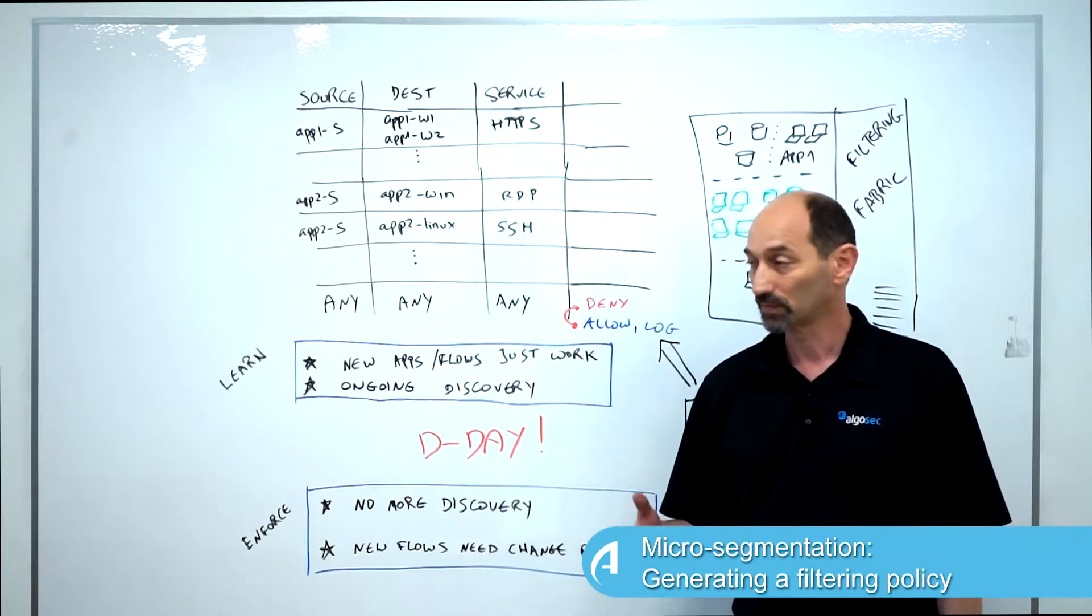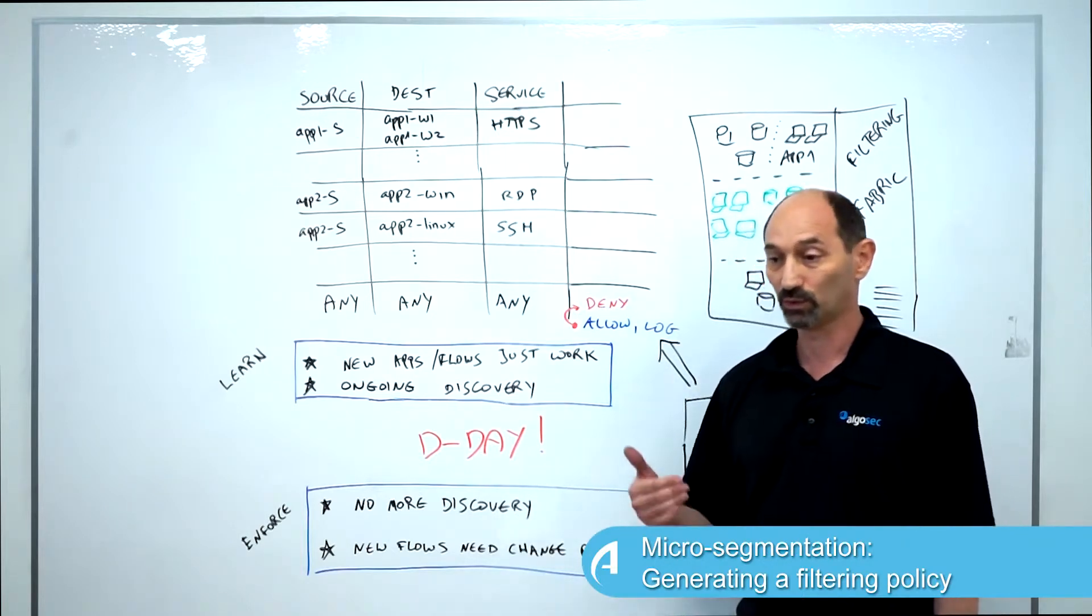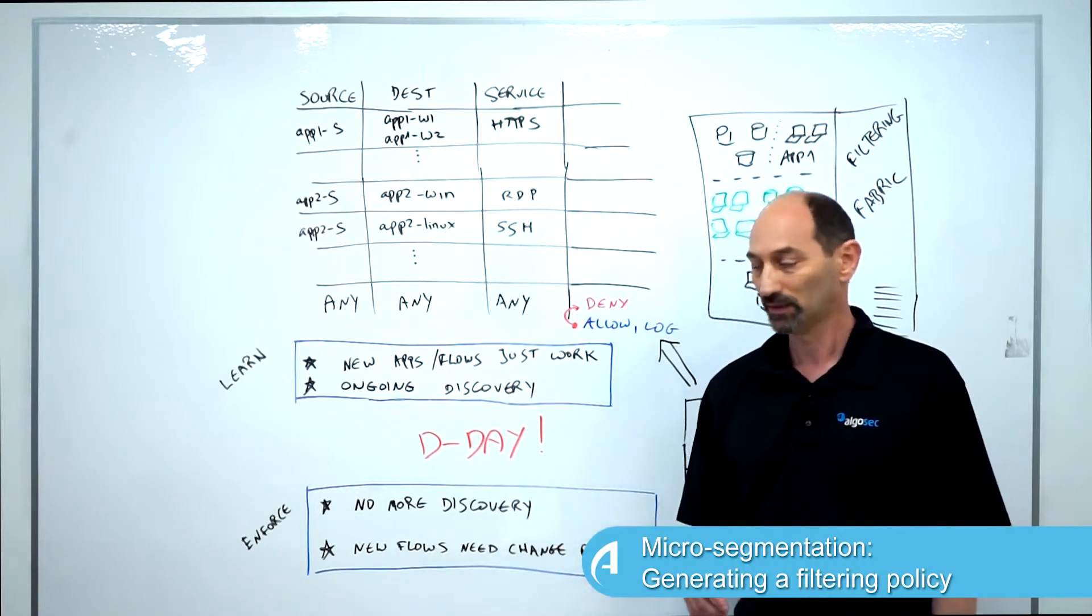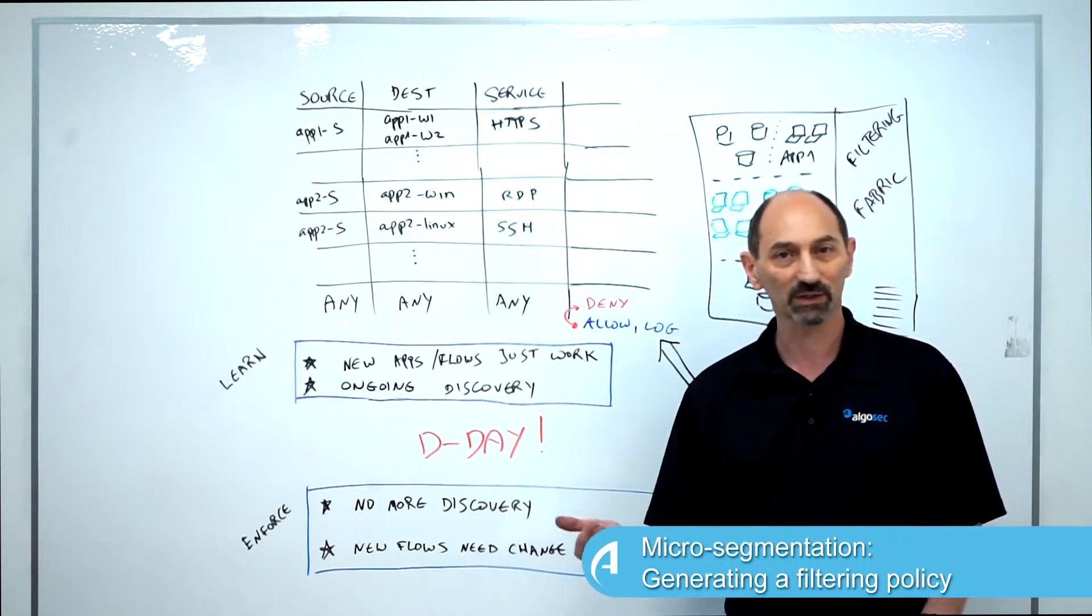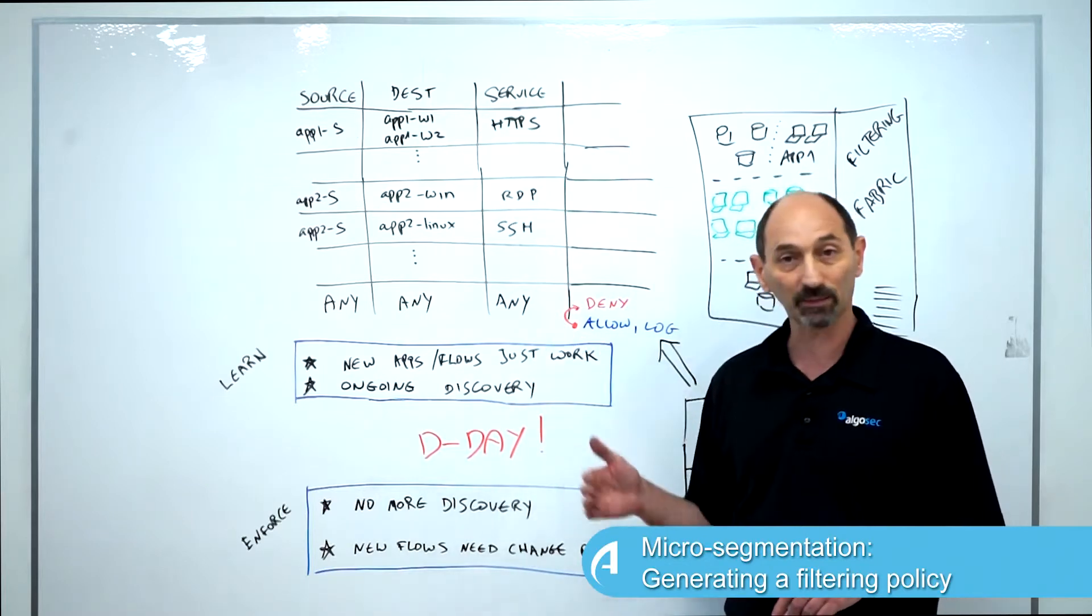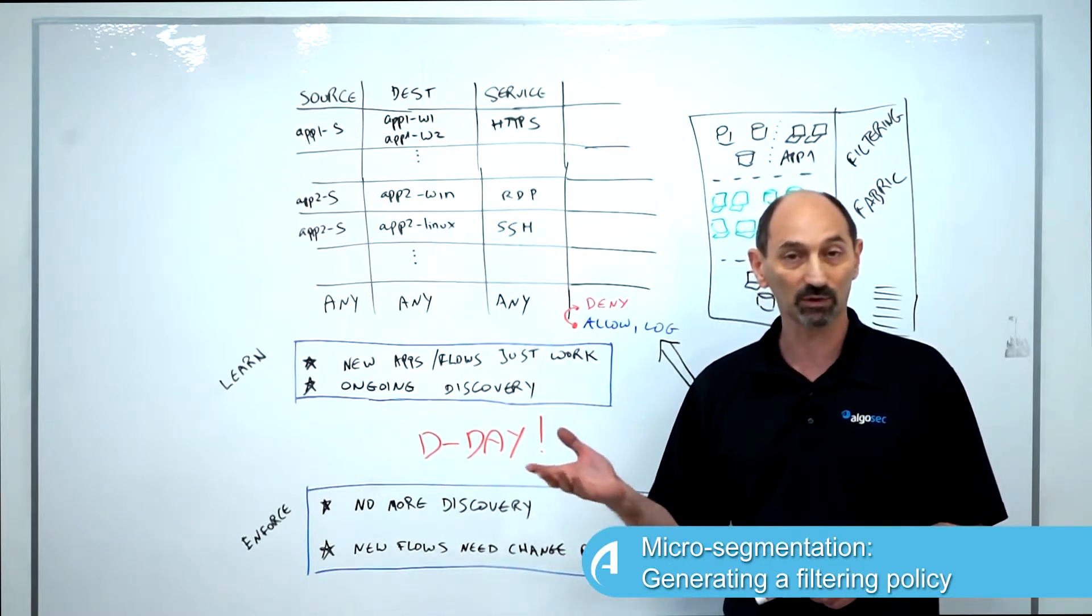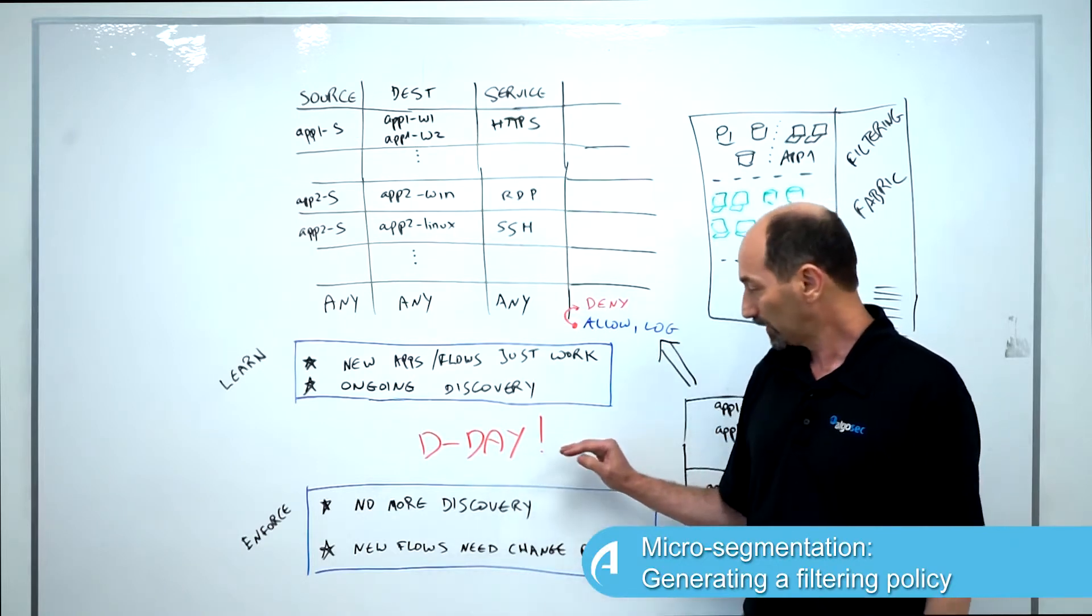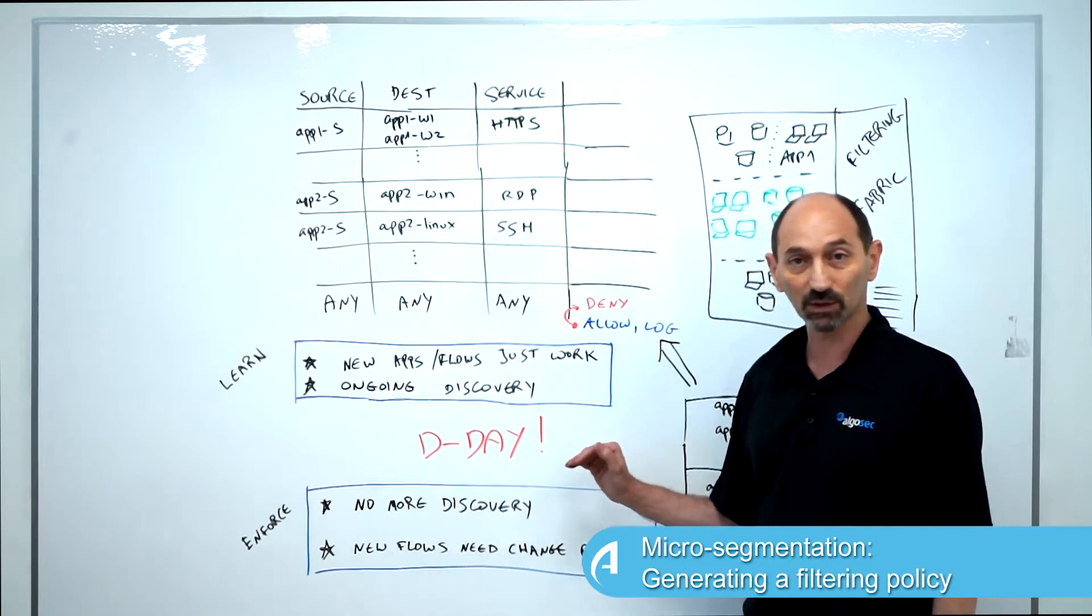When you have such a change, you need to be prepared. You need to communicate. You need to get management approval. You need to set a change control window. You need to notify everybody that this is happening. Possibly during D-Day, you need to have all hands on deck because maybe you missed something and applications will break. So you need to man those help desk phone lines. This is a major event. It's a milestone in the project.